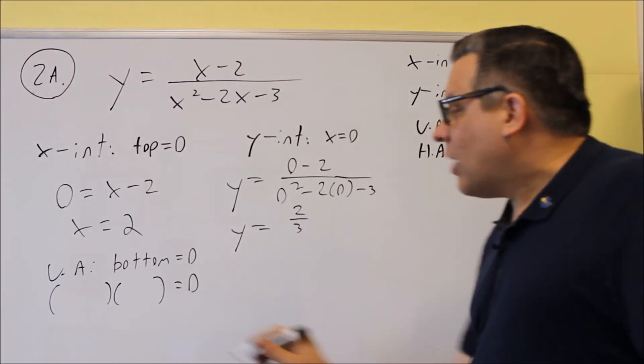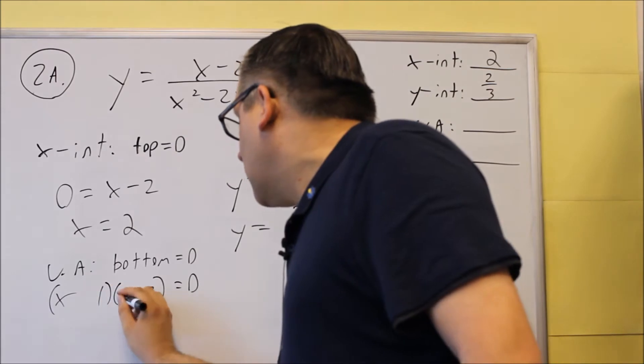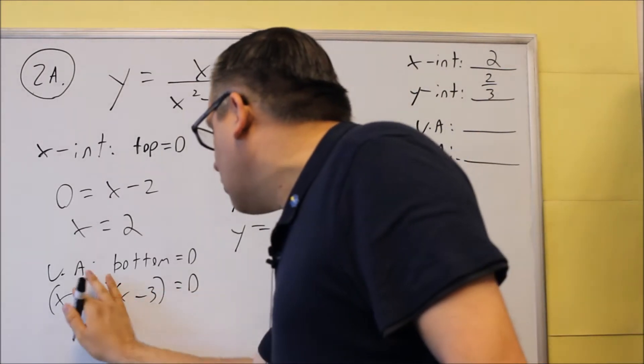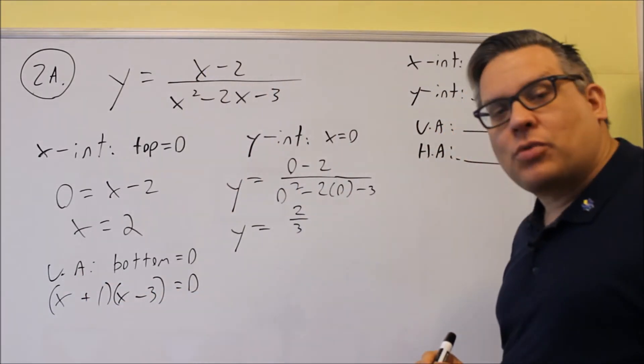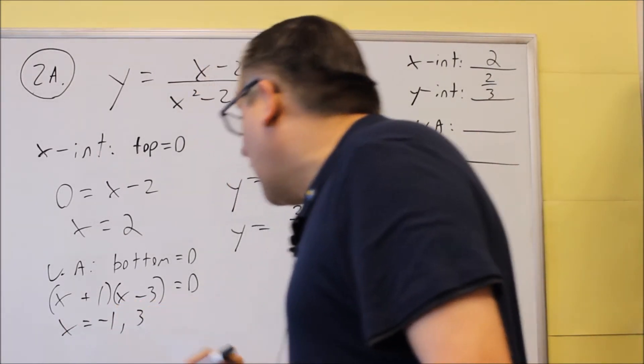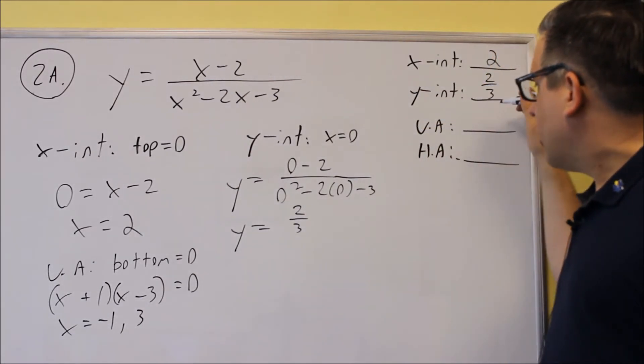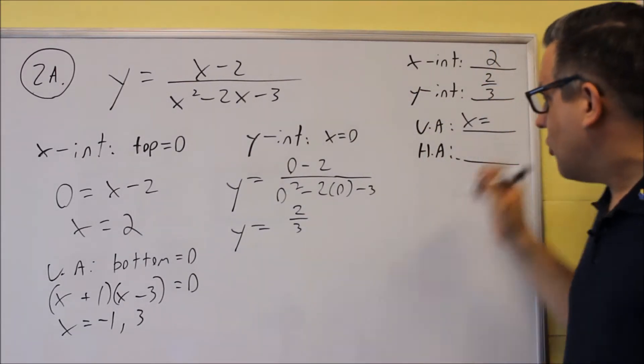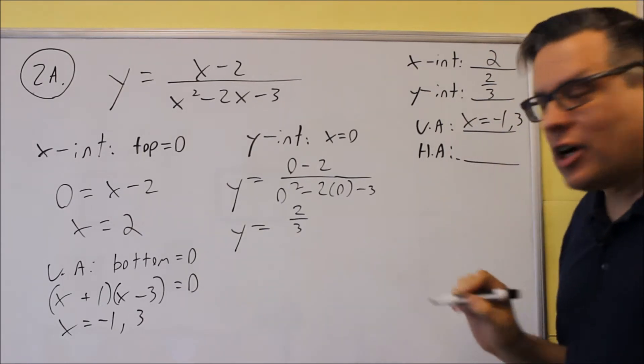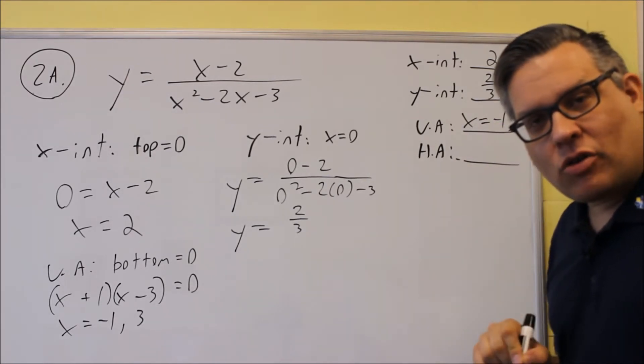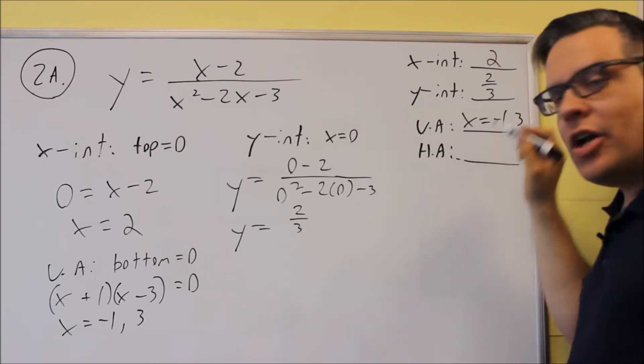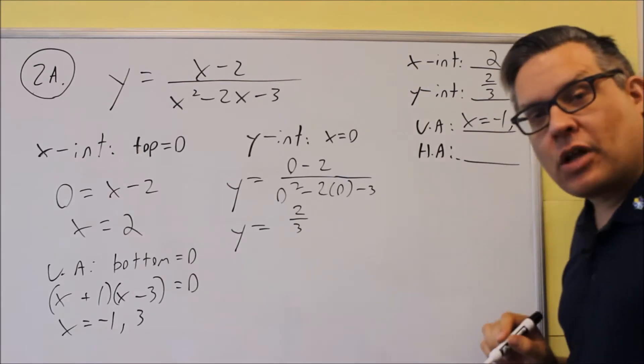So if we factor that, we're going to get one and three. And then we need to decide which one's going to be negative. We want to get a negative 2x there, which means that the negative has to go with the larger number. So we have plus one and minus three. And if you set those equal, you're going to get x equals negative one and three. Now when we put that here, make sure you put x equals. It's okay if you want to list it like I did here, x equals negative one comma three, as long as you have an x equals in there somewhere.